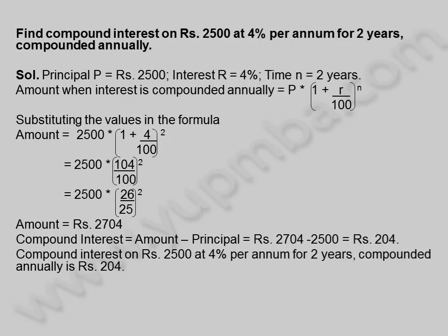Compound interest on 2,500 rupees at 4 percentage per annum for 2 years, compounded annually, is 204 rupees. Let us see another example.